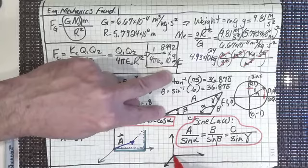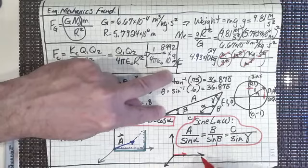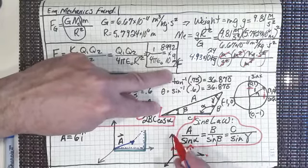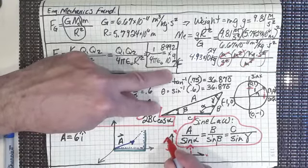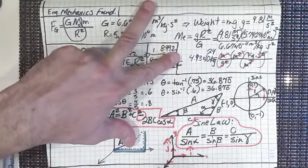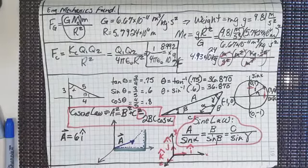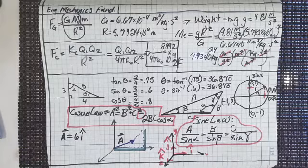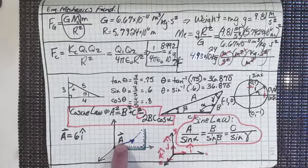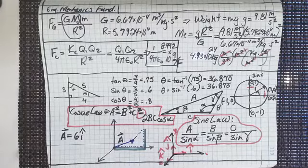One unit in the X direction is called i-hat. One unit in the Y direction is called j-hat. One unit in the Z direction is called k-hat — get used to the correct engineering terminology. So the reason I say six i-hat is because I'm multiplying six times i-hat. This factor could be a force vector, could be an acceleration vector — all of those denote a vector magnitude and direction.